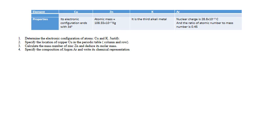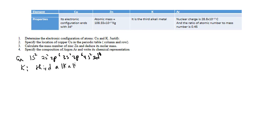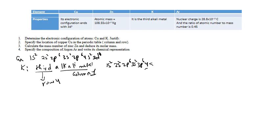In a table of applications: for copper, the electron configuration ends in 3d9, so writing it in full gives 1s2, 2s2, 2p6, 3s2, 3p6, 4s2, 3d9. For element K (potassium), it is the third alkali metal, so it is in column 1, row 4. Its electron configuration is 1s2, 2s2, 2p6, 3s2, 3p6, 4s1.